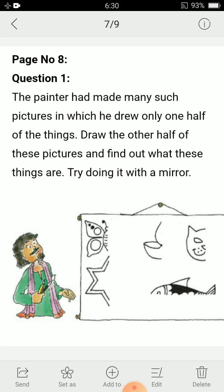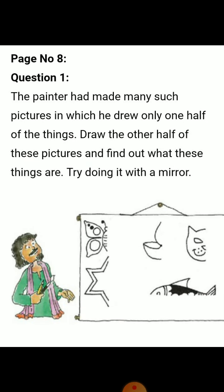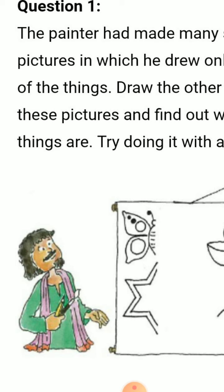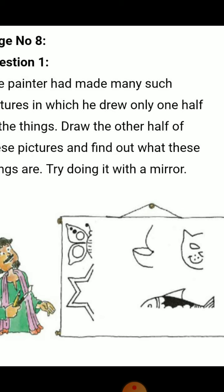What this question is saying to us is that there is one painter who has drawn some pictures, and these pictures are only half. He has drawn only half pictures. As you can see on screen, these are the half pictures and the rest part of these pictures you have to draw. How you will draw the rest part — for that you can take the help of a mirror. It is saying to you to kindly complete the given pictures. You all know this because you all are familiar with the concept of symmetrical and asymmetrical images as well as mirror halves.